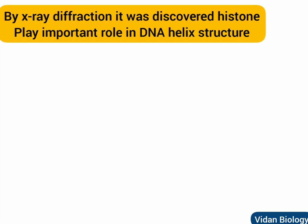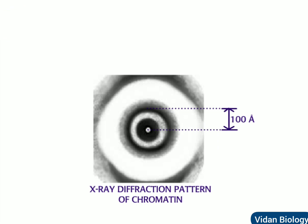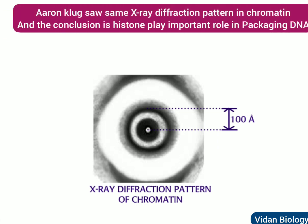X-ray diffraction studies later showed that histones play an important role in providing structure for the DNA helix. In 1964, Maurice Wilkins and Vittorio Luzzati noticed that chromatin has a repeated pattern with intervals of about 100 angstroms. This repeat is different from the repeating pattern of DNA itself. Aaron Klug also saw a similar X-ray diffraction pattern in chromatin, suggesting that histones play an important role in packaging DNA.